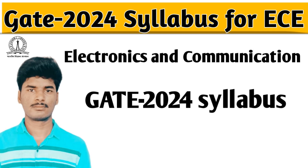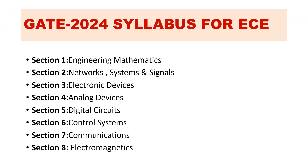Hello friends, in this video I'm going to tell you the GATE syllabus for Electronics and Communication branch for 2024. The subjects are mainly classified into eight sections, and we need to study all eight sections including aptitude. Let's see what those eight sections are and what different types of subjects are included.